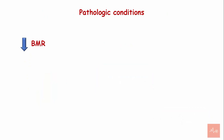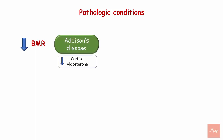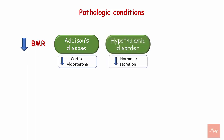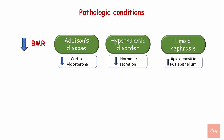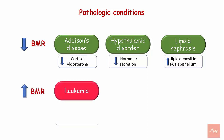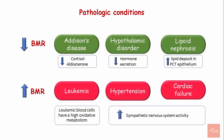Pathologic conditions. Conditions associated with reduced BMR include Addison's disease, which involves decreased cortisol and aldosterone production, hypothalamic disorders associated with reduced hormone secretion, and lipoid nephrosis with increased lipid deposition in the proximal convoluted tubule epithelium. Conditions associated with increased BMR include leukemia, hypertension, and cardiac failure.